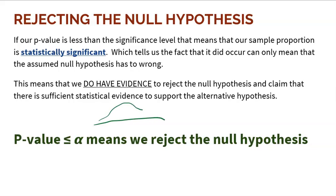This is why drawing a picture helps. In the normal distribution, right in the center is the null — the proportion we assume to be true. If our p-value is really, really low, that's significant. It means our sample is very unusual and very unlikely to occur, which can only mean one thing: the alternative is correct.